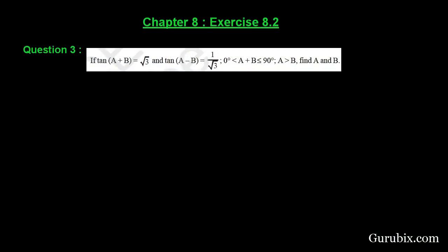Welcome friends, let us solve question number 3 of Exercise 8.2 of Chapter 8. The question says: if tan(a+b) = √3 and tan(a−b) = 1/√3, and (a+b) is greater than 0° but less than or equal to 90°, and a is greater than b, then find a and b.